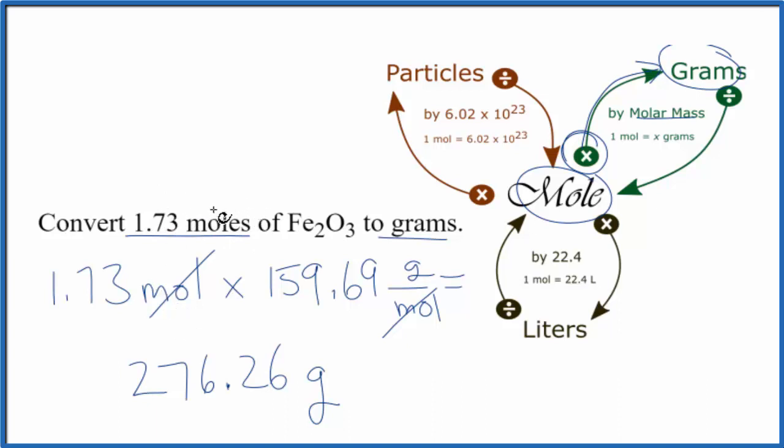So to recap, we're going from moles to grams. We know that we're going to multiply by a conversion factor, the molar mass, which we find on the periodic table. Moles cancels out, we're left with grams. This is Dr. B and thanks for watching. We'll see you next time.